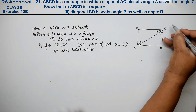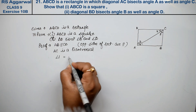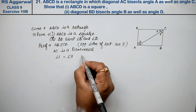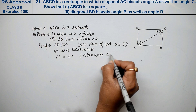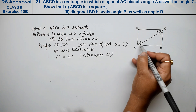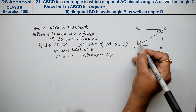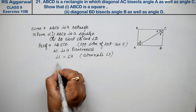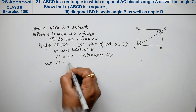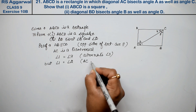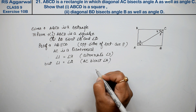जब AC उसकी transversal है तो angle 1 किसकी equal होगी? Angle 4 के. Angle 1 equals to angle 4. Why? Because these are the alternate angles. लेकिन AC bisect कर रहा था angle A और angle C को, तो angle 1, angle 2 के equal दे रखा है. Angle 1 is equal to angle 2. Why? Because AC bisects angle A.